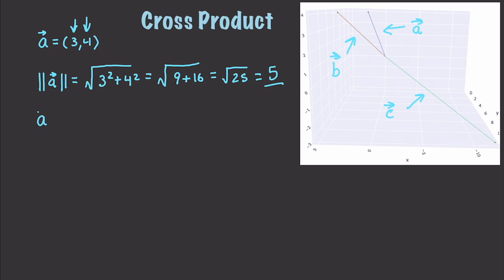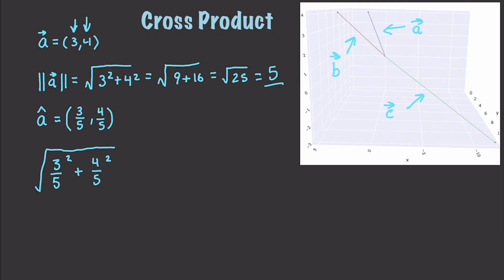You represent the unit vector by changing it to A-hat. So this is going to be equal to three over five and four over five. To verify that this is indeed a unit vector, we get the magnitude of it and find it has a value of 1. So let's verify: the square root of (3/5) squared plus (4/5) squared equals the square root of 9/25 plus 16/25, which equals the square root of 25/25, which is equal to 1.